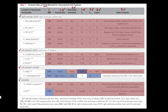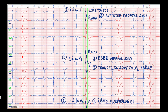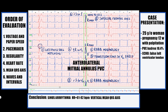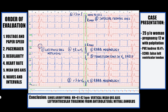For anterolateral mitral annulus confirmation, notching of the late-phase QRS in inferior leads should be present. As you see, we have late-phase QRS notching in AVF, confirming the anterolateral mitral annulus localization. This is a left ventricular PVC, and this fact changes the management strategy. So we have left ventricular trigeminy from the anterolateral mitral annulus.